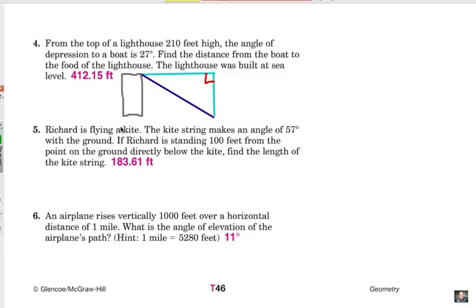From the top of a lighthouse 210 feet high, if I label this 210 feet high, notice that as I look at this as a right triangle, that's also this leg here. We can kind of think of it as two separate right triangles that are the same. The angle of depression to a boat is 27 degrees. Looking down from the top of the lighthouse down to the boat, which is right here, I have a 27 degree angle of depression.